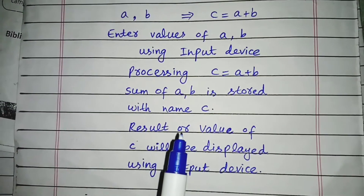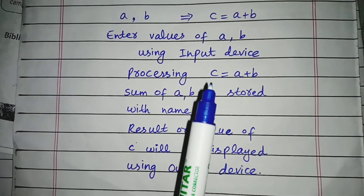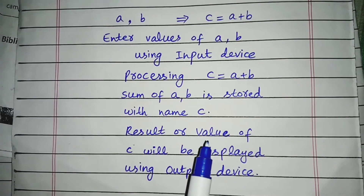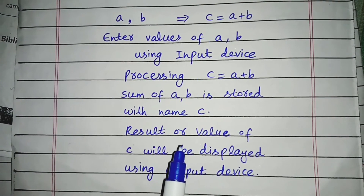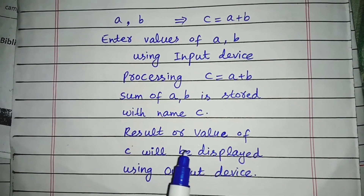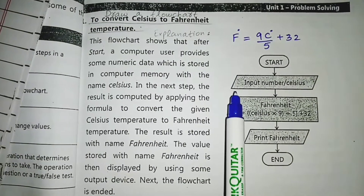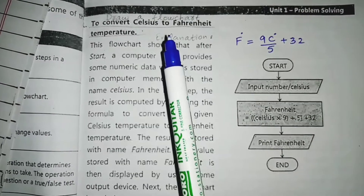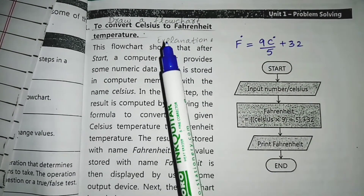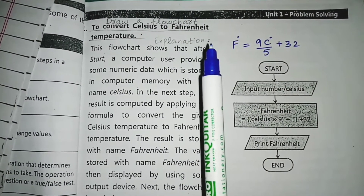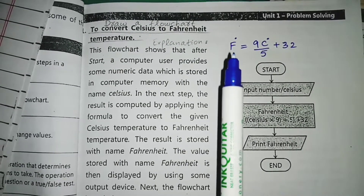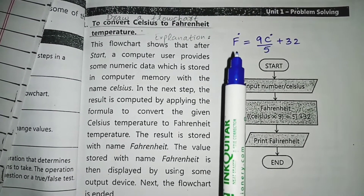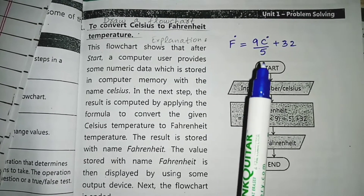After that, the result — which is sum C — will be displayed using some output device. Students, on page 9, the first example is related to the flowchart to convert Celsius to Fahrenheit temperature. We have to draw a flowchart for the conversion of temperature from Celsius to Fahrenheit.